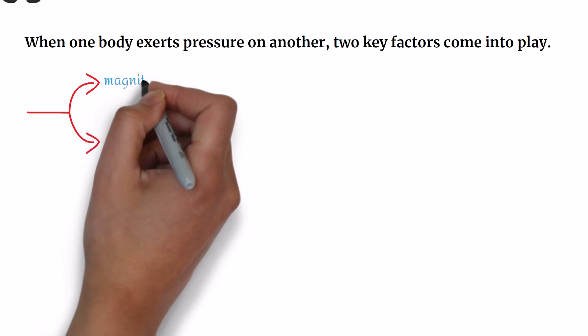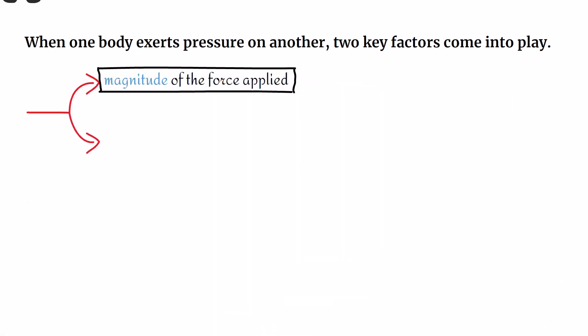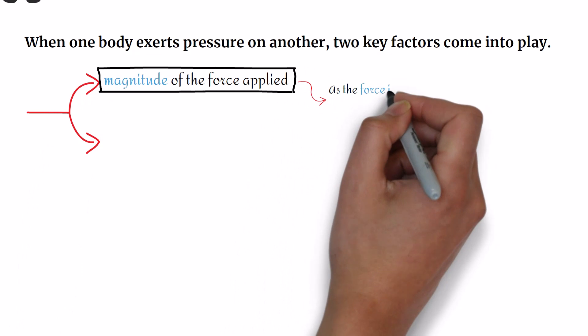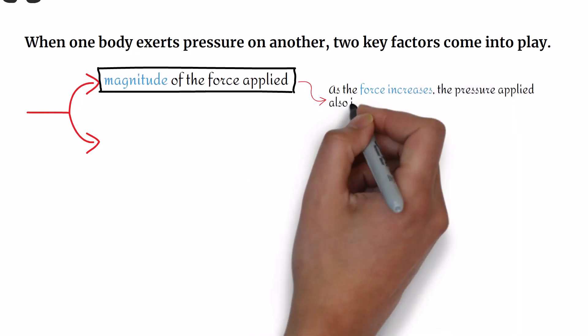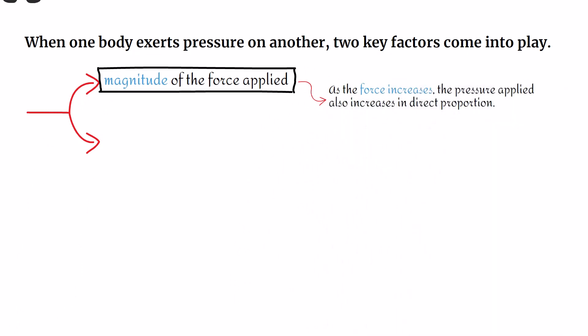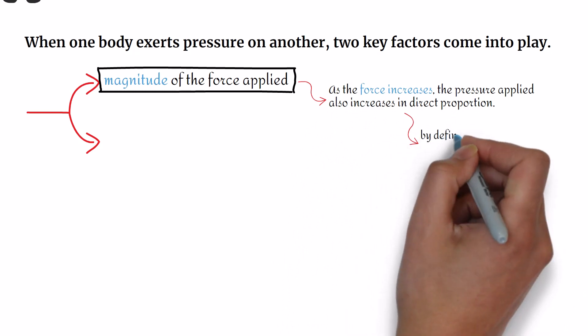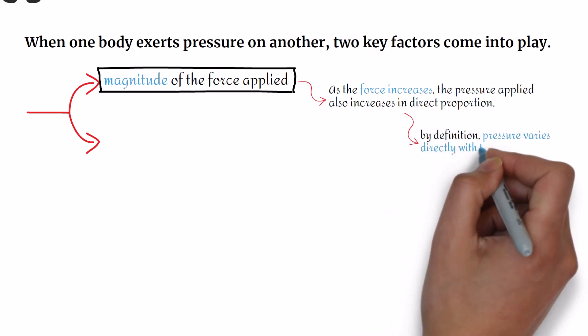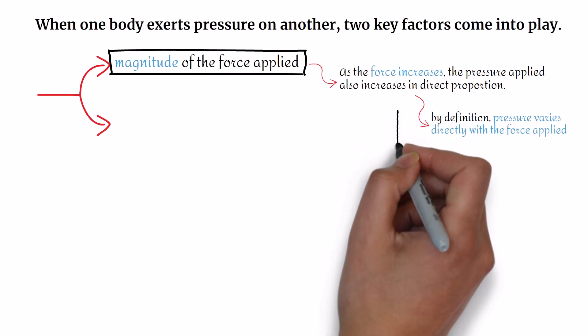The first factor is the magnitude of the force applied. As the force increases, the pressure applied also increases in direct proportion. This happens because, by definition, pressure varies directly with the force applied.